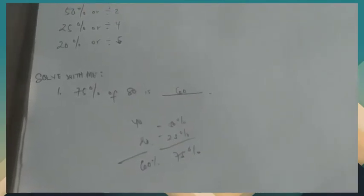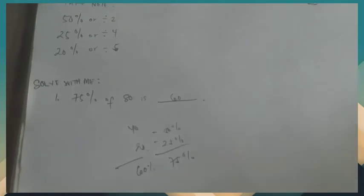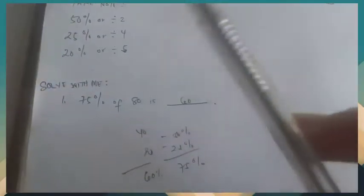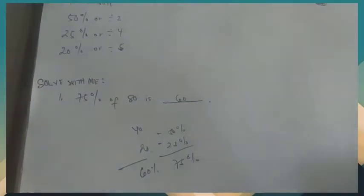We can solve it faster by applying this technique: divided by 2, divided by 4, and divided by 5. That's the fastest way. Let's move to number 2.